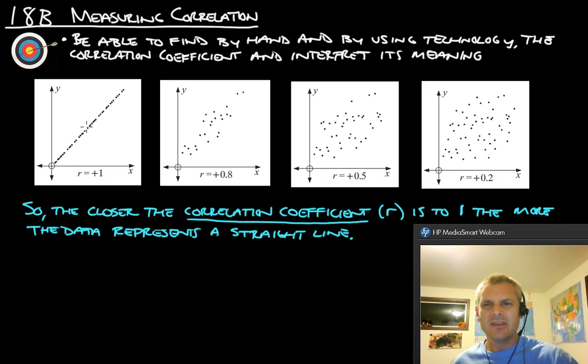So this one here, the data is pretty much in a perfectly straight line, so the correlation coefficient is 1. This is pretty close to a straight line. It's fairly tightly clumped, so the correlation coefficient is 0.8. This one is starting to get a little bit more scattered here, so the data isn't quite as well clumped together, so this is a 0.5.